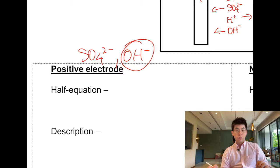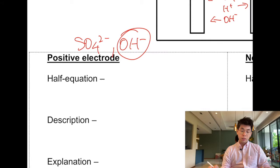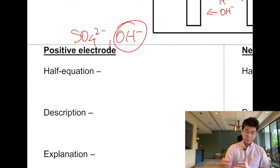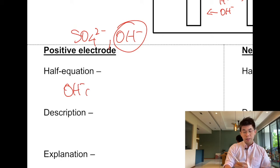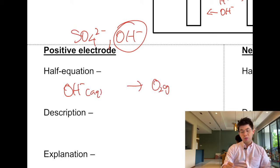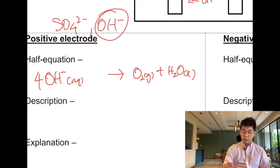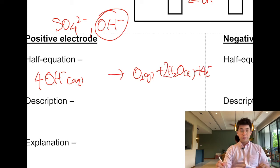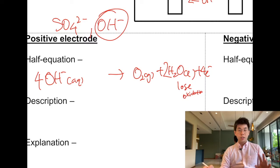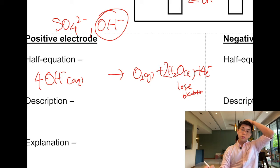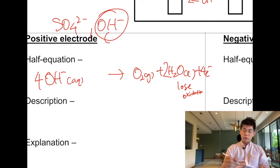For hydroxide, we've done this several times. The half-equation: OH− gives oxygen and water as products. To balance: 4OH− → O₂ + 2H₂O + 4e−. This is losing electrons, so this is oxidation. Therefore this is the anode.